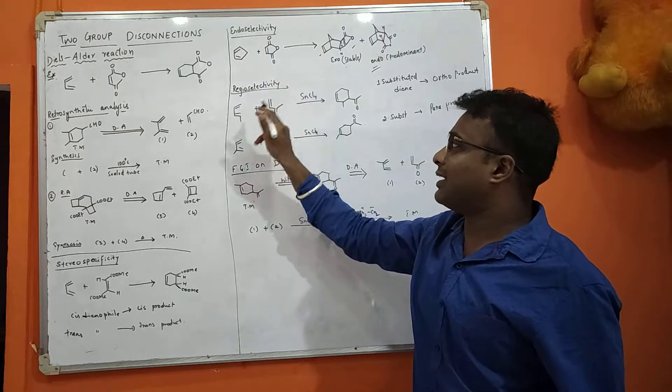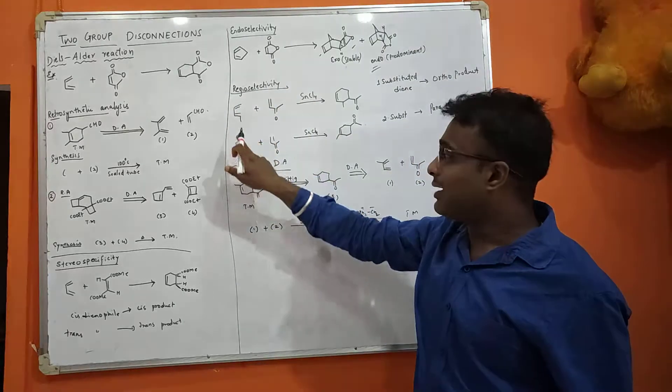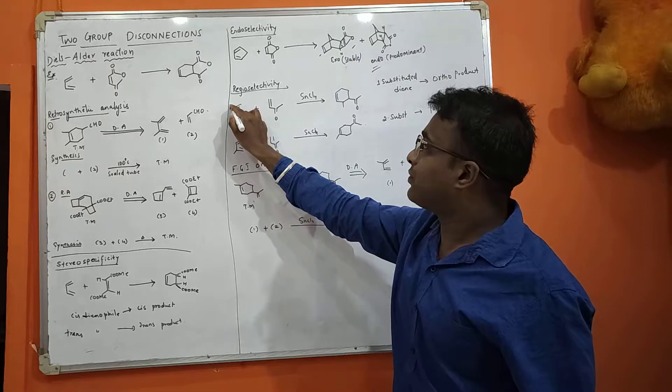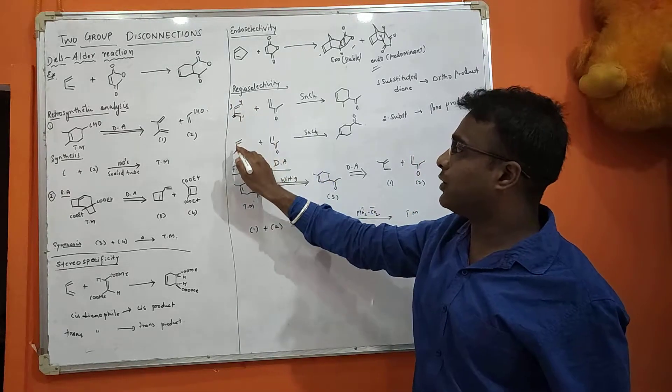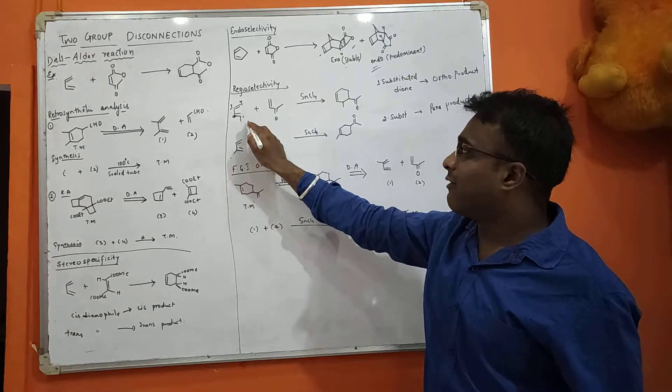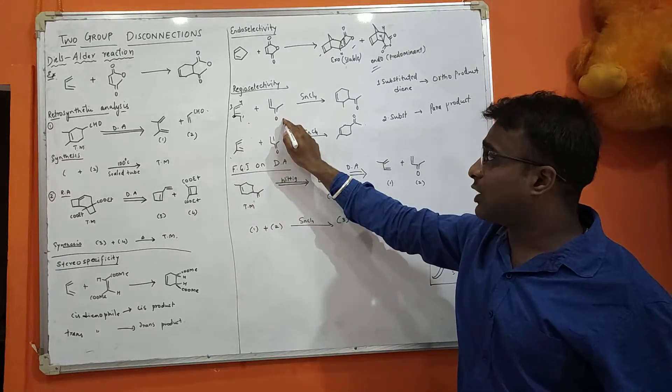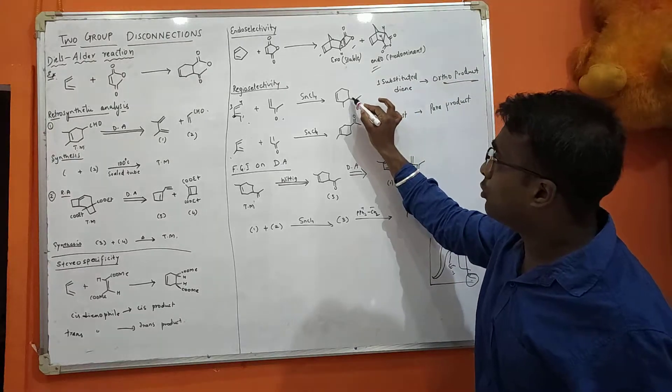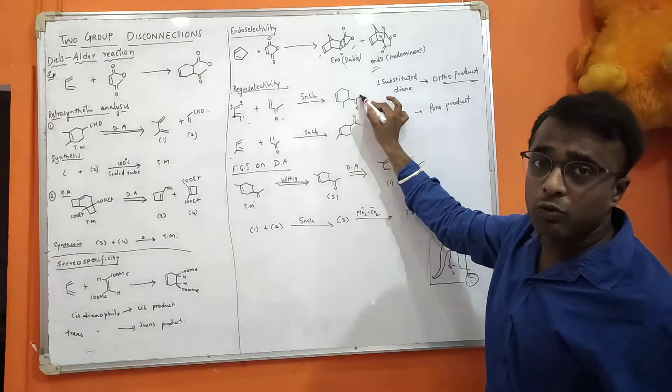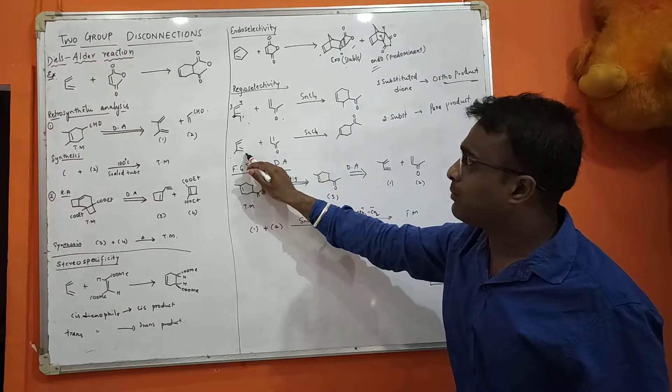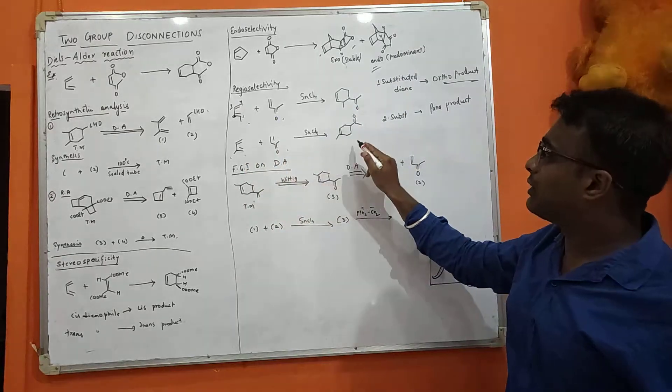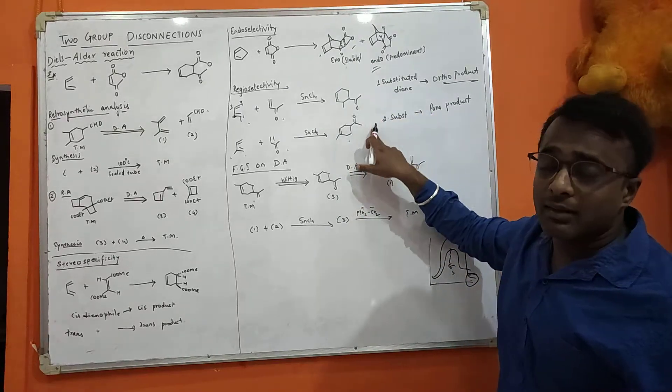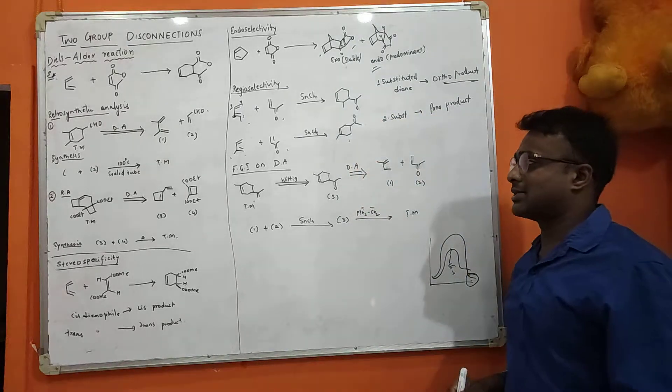Now one more thing is regioselectivity. This is one-substituted diene and this is two-substituted diene. If you number like this: one, two, three, four. One-substituted diene reacts with dienophile to give ortho product. This is C=O group, and the methyl group is ortho to this group. When two-substituted product reacts with dienophile, it gives para substituted product. You are not getting meta product in both cases.